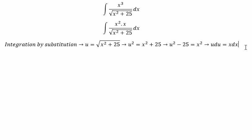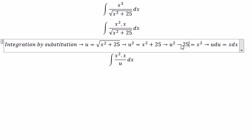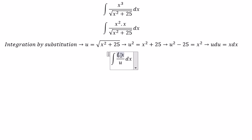And now we need to change the square root, we change for u. X squared, we change for u squared minus 25. X dx, we change for u du.